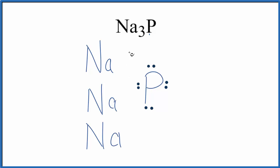Since each sodium lost an electron, and electrons are negative, it now has a positive charge. The phosphorus gained three electrons, so now it has a three minus ionic charge.